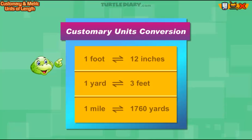Here you can see the conversion table for all customary units. 1 foot equals 12 inches. 1 yard equals 3 feet. 1 mile equals 1,760 yards.